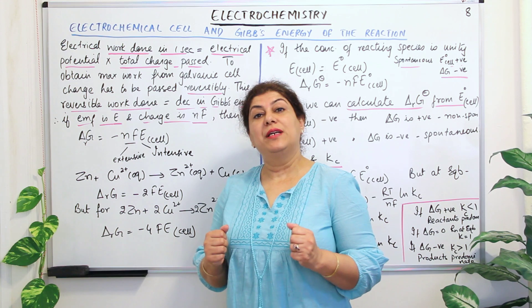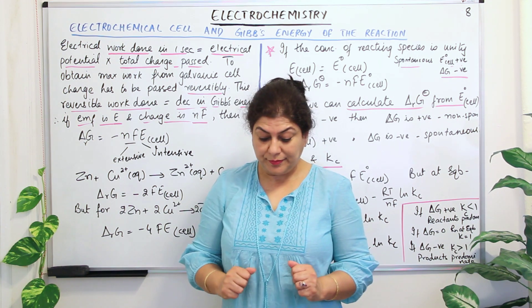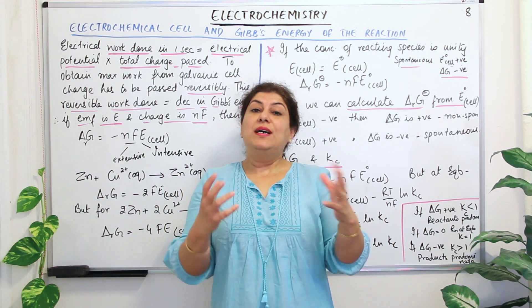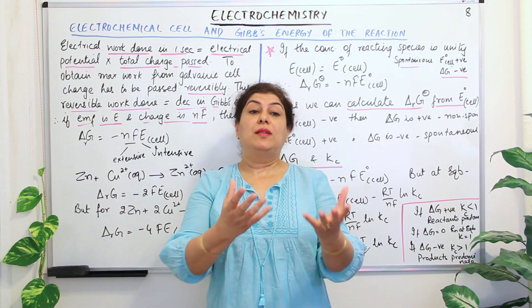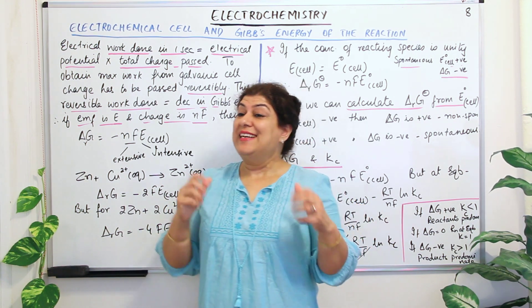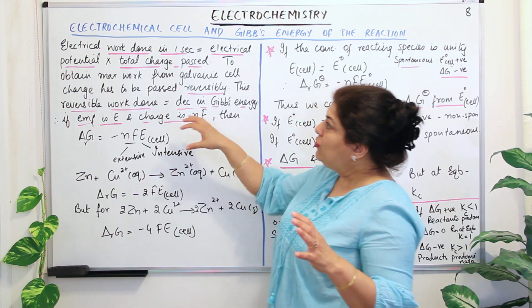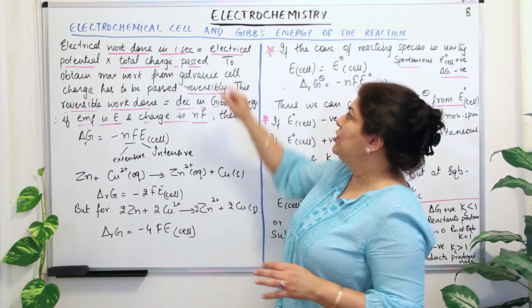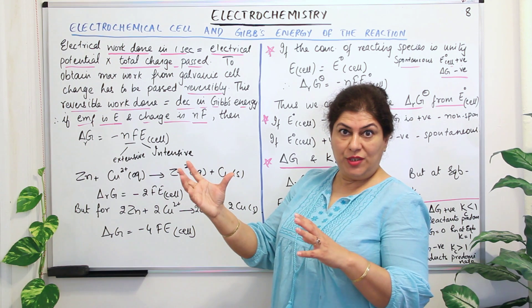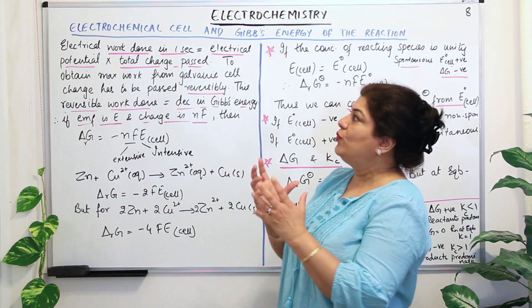Gibbs free energy, or delta RG as we call it, is the energy that is available to do work. The work done by a system would be maximum when all of the free energy is used. For an electrochemical reaction, the amount of electrical work done would be equal to the electric potential multiplied by the total charge passed.